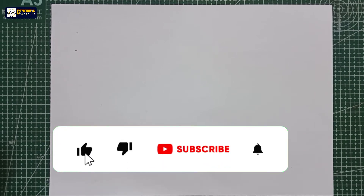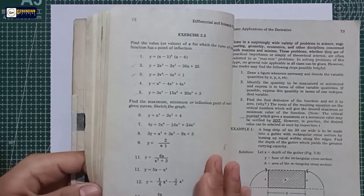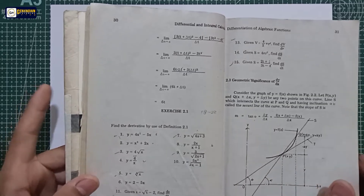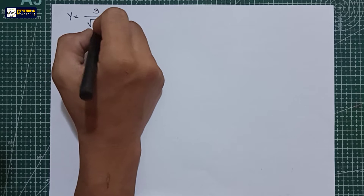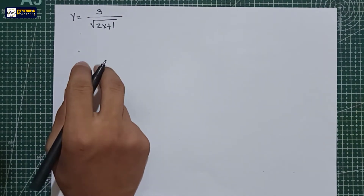Hello and welcome back to Genuine Tutorial. We are now on example number nine of first principal derivative. In number nine we have y is equal to 3 all over by the square root of 2x plus 1. For examples number one to eight, I will put the links in the description box of this video.